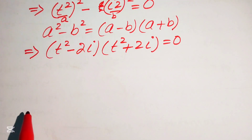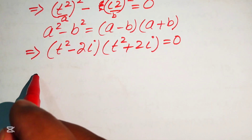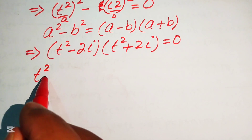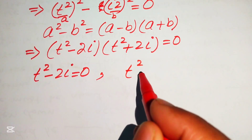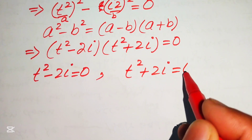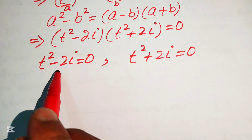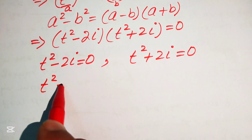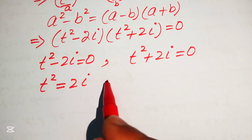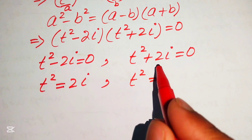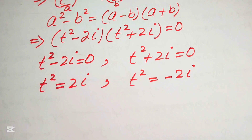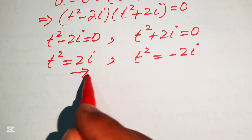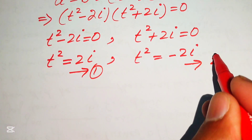We now split this into two cases. Case 1: t² minus 2i equals 0, which gives t² equals 2i. Case 2: t² plus 2i equals 0, which gives t² equals minus 2i. We label these as equation 1 and equation 2 respectively.